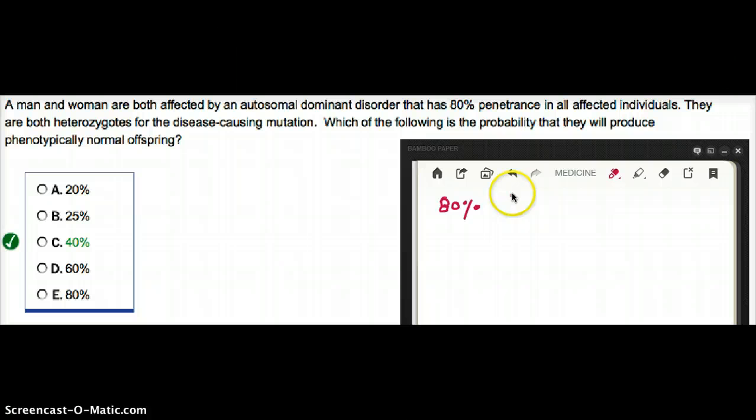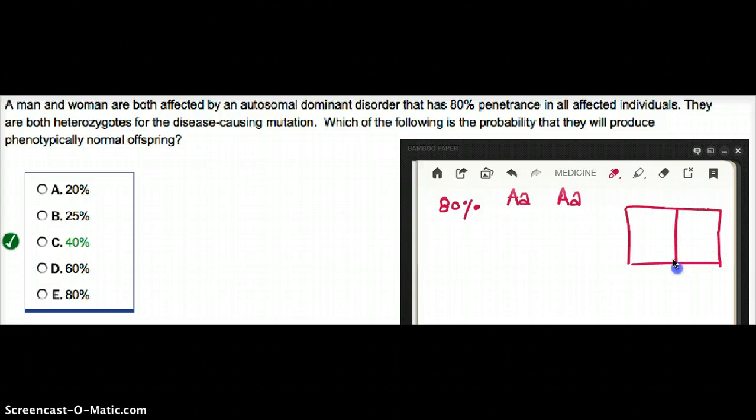So, let's say the disease is big A, small A, and big A, small A. Which of the following is the probability that they will produce phenotypically normal offspring? Let's see what is the probability that they will produce phenotypically normal offspring.